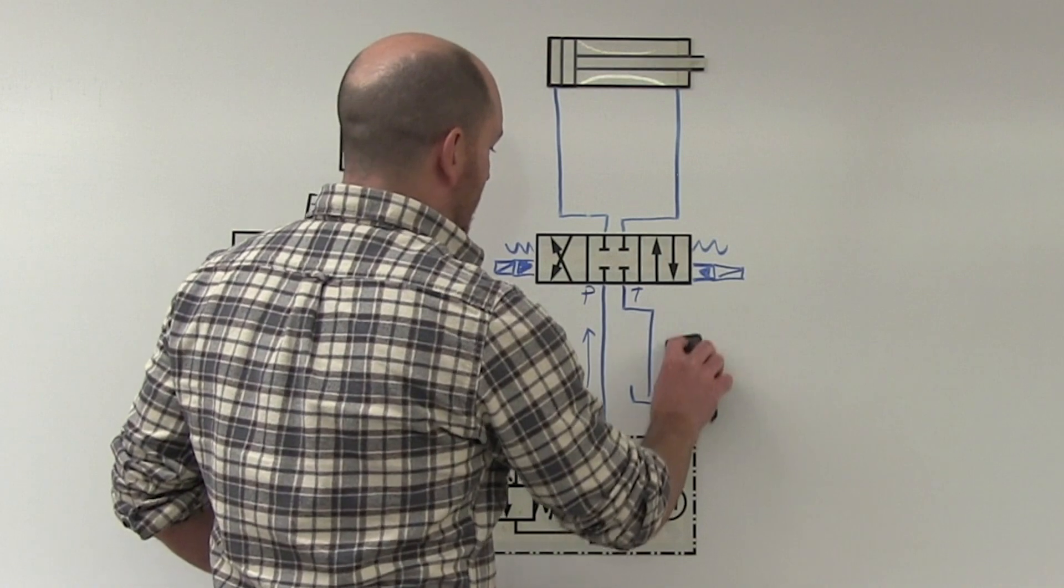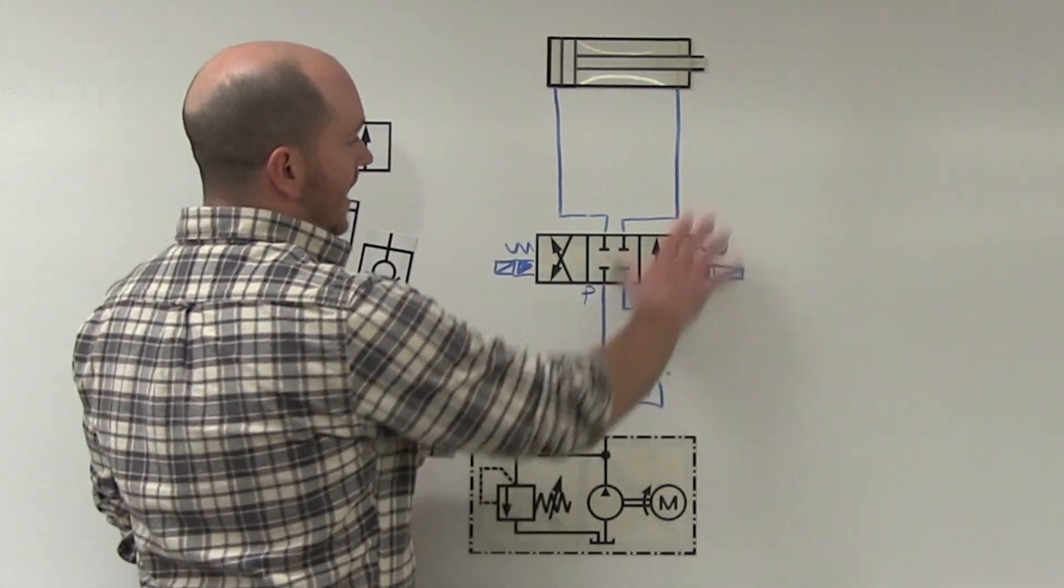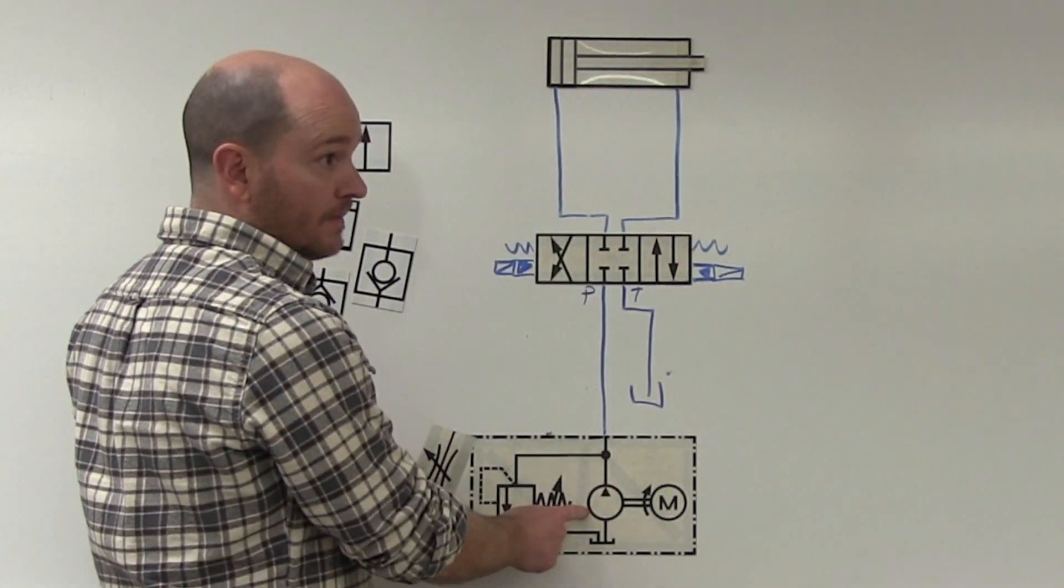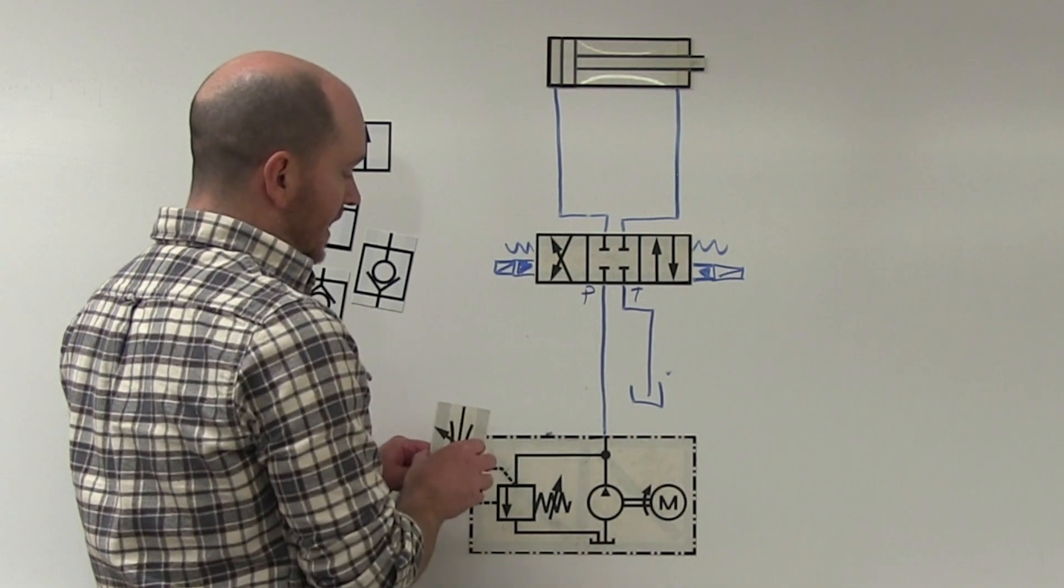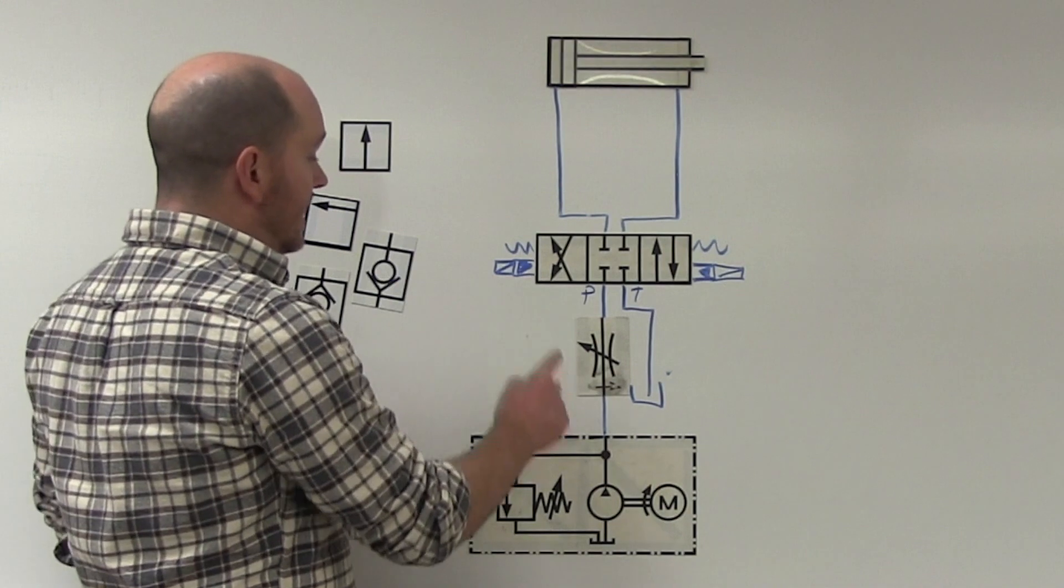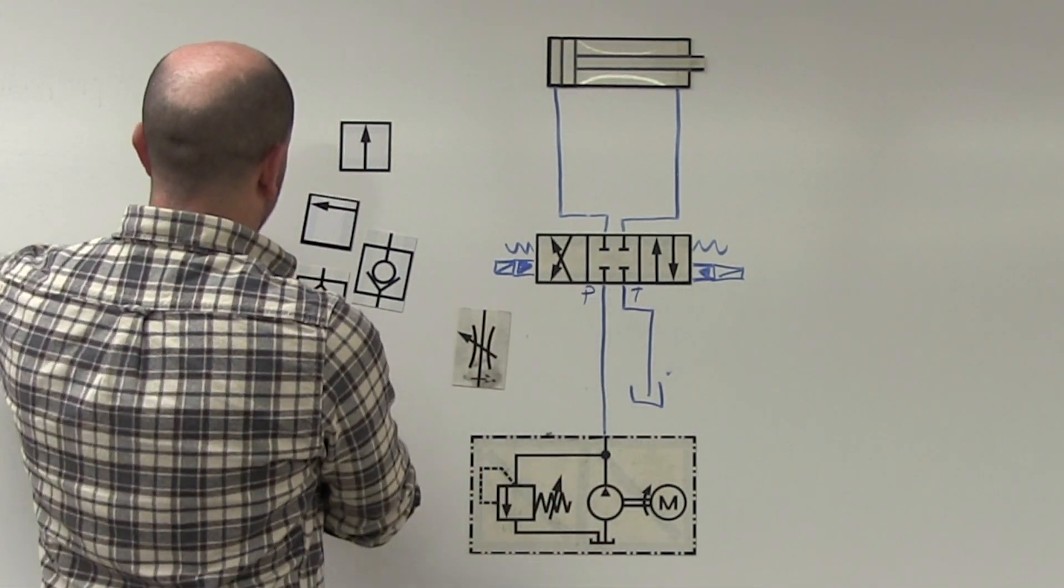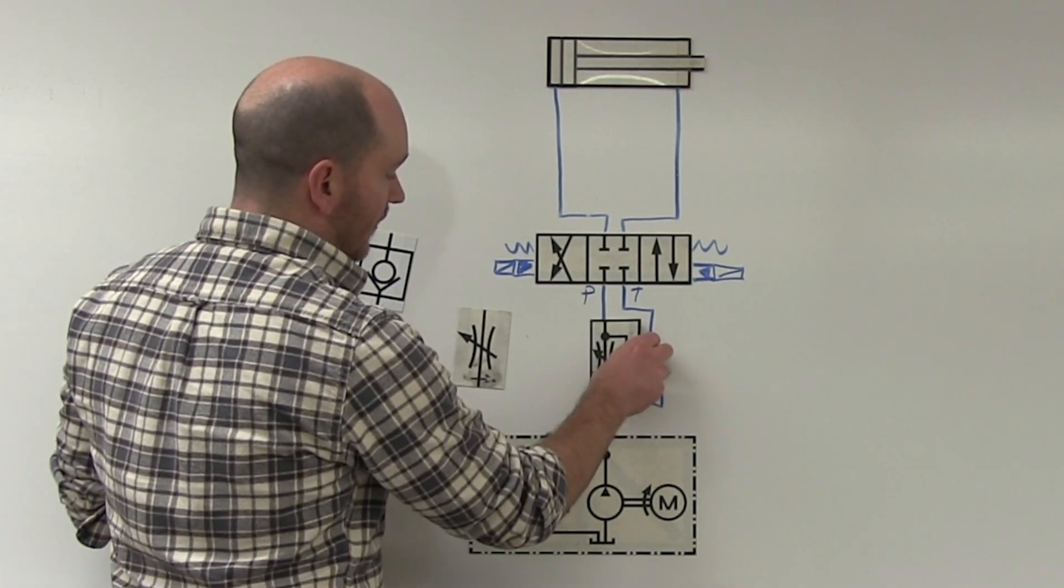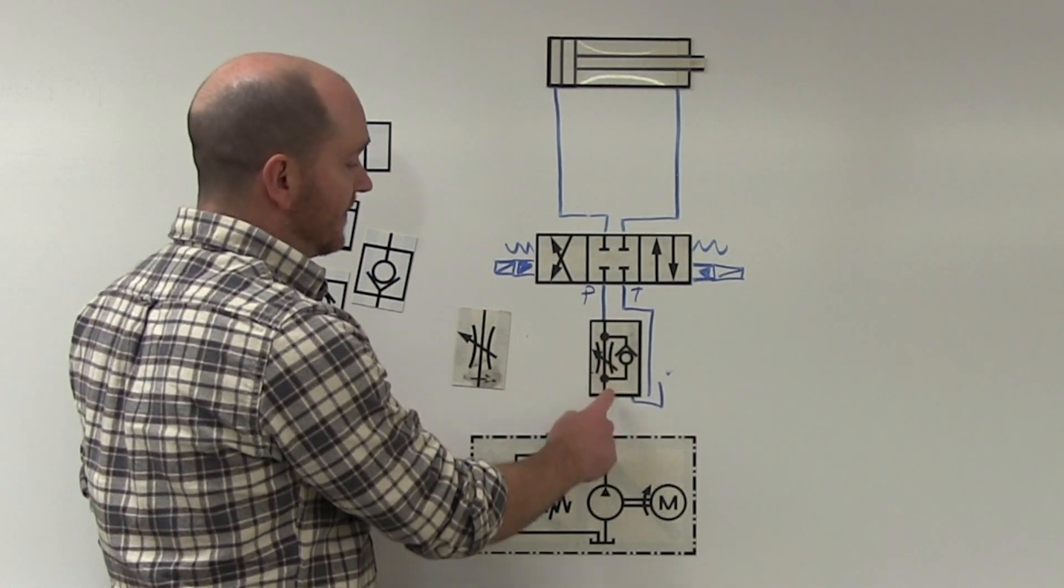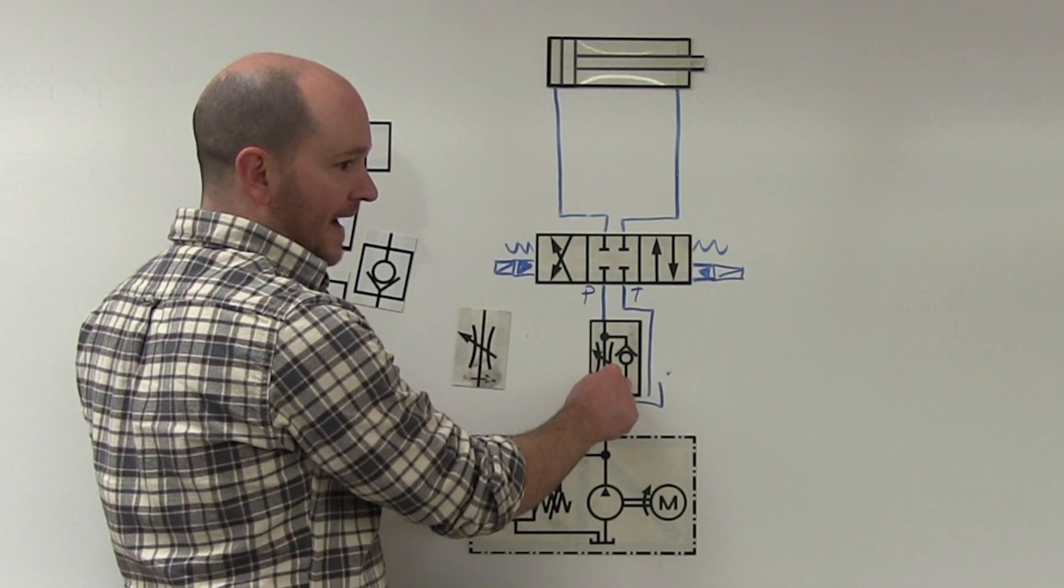So if I were to, let's say for some reason I wanted to control the flow going to everything in the system right after, between the power supply and the directional control valve, all I would require is a needle valve here, because oil only goes in this way. If I were to put a meter valve or a flow control, or a needle valve with a bypass check valve, that would be pointless, because oil never flows back this way.